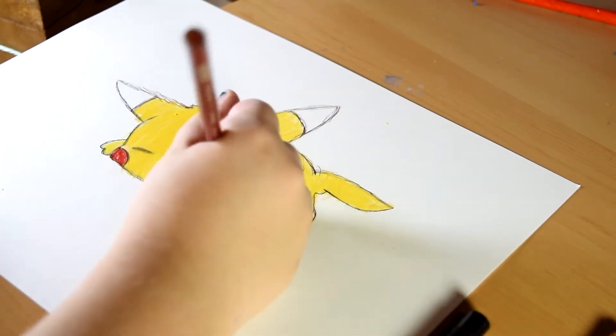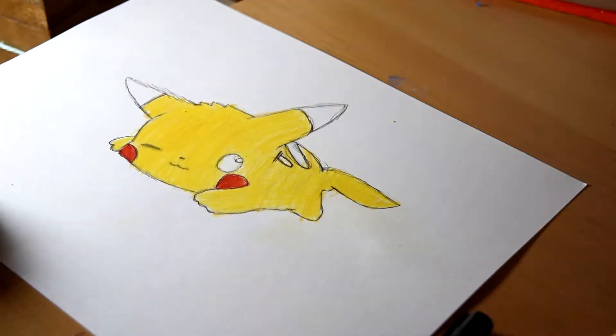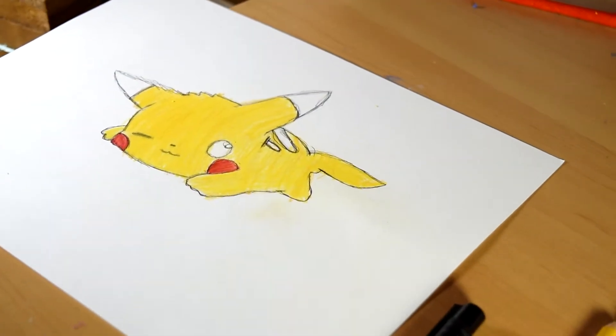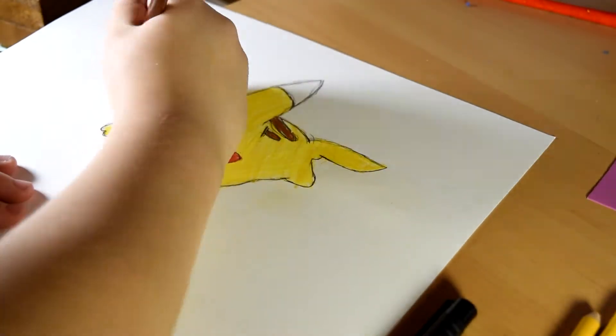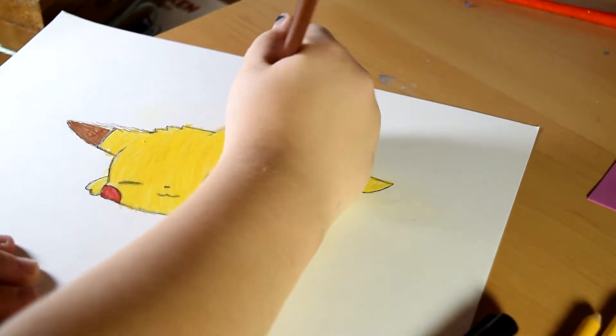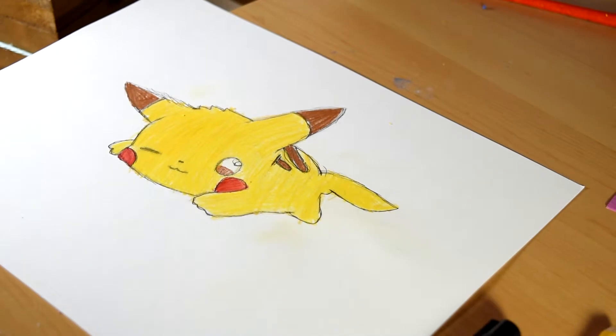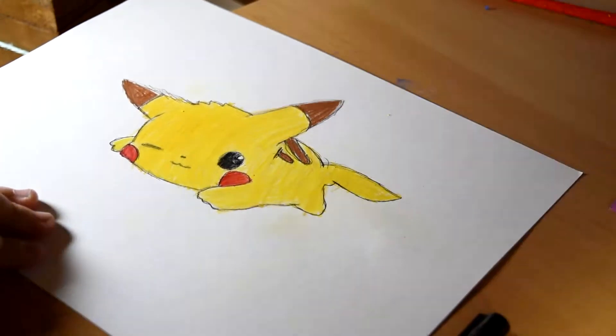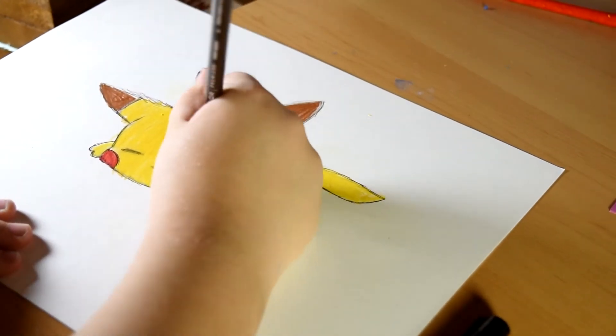And so, what I did for the shading was I did two browns - a light brown and a dark brown. And then for the body, I did a yellow and another yellow. And then for the cheeks, I did two reds.